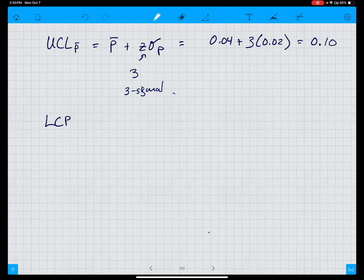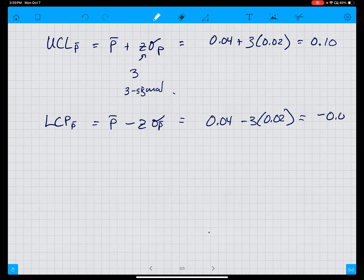And the lower control limit for p-bar is equal to p-bar minus z sigma p-bar, is equal to 0.04 minus 3 times 0.02, is equal to negative 0.02. But because you can't have a negative proportion, we just call that 0, and it's important to call that 0.